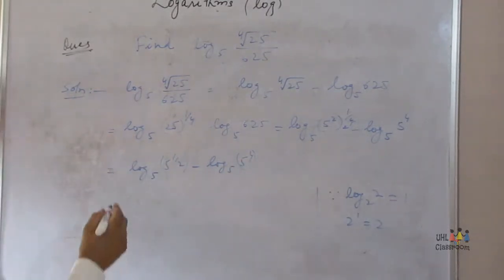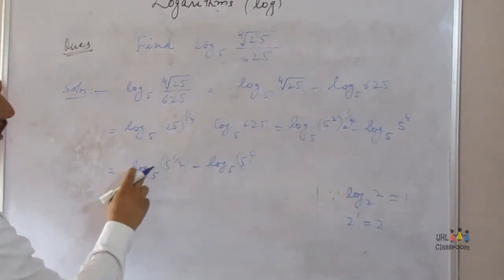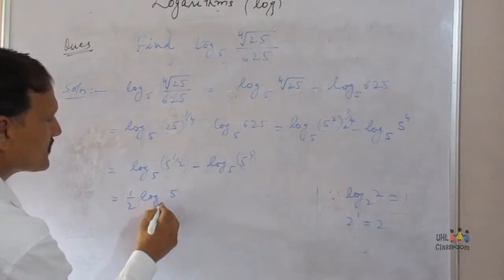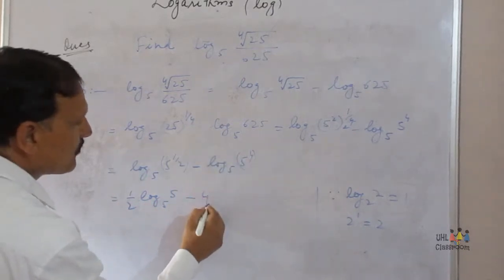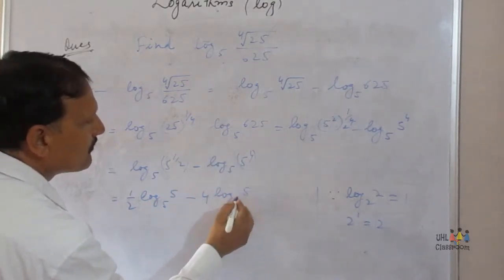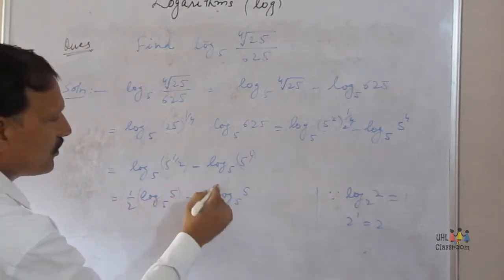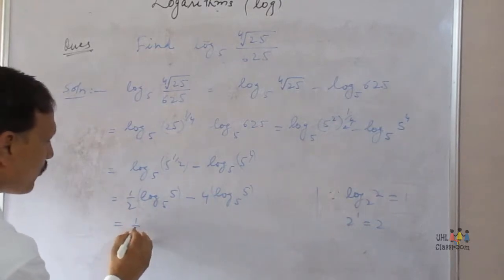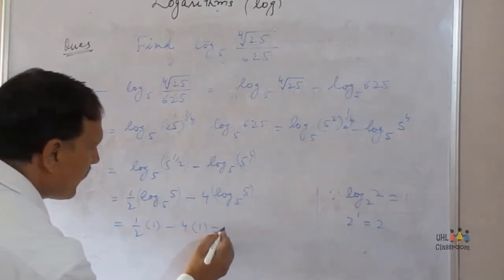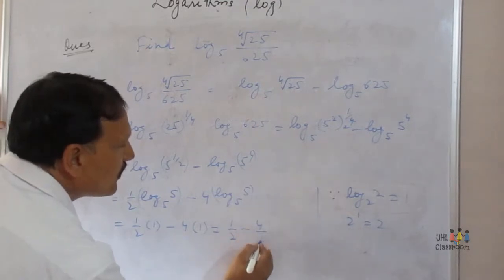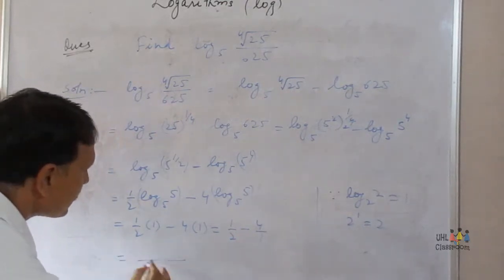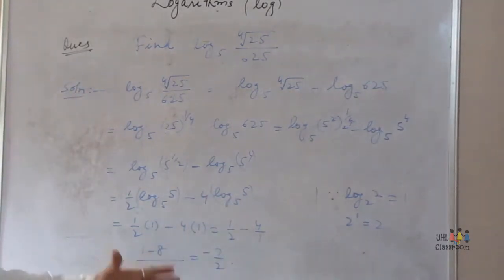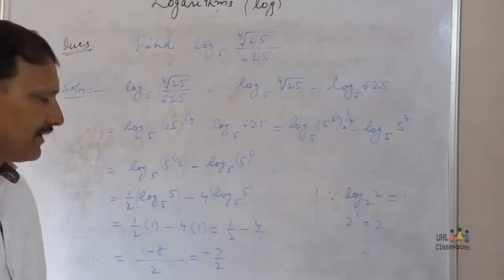Applying the third law, log m raised to n equals n log m: 1 by 2 into log of 5 to the base 5, minus 4 into log of 5 to the base 5. Since log of 5 to the base 5 equals 1, this gives 1 by 2 minus 4, which equals 1 by 2 minus 8 by 2, that is minus 7 by 2. The answer is minus 7 by 2.